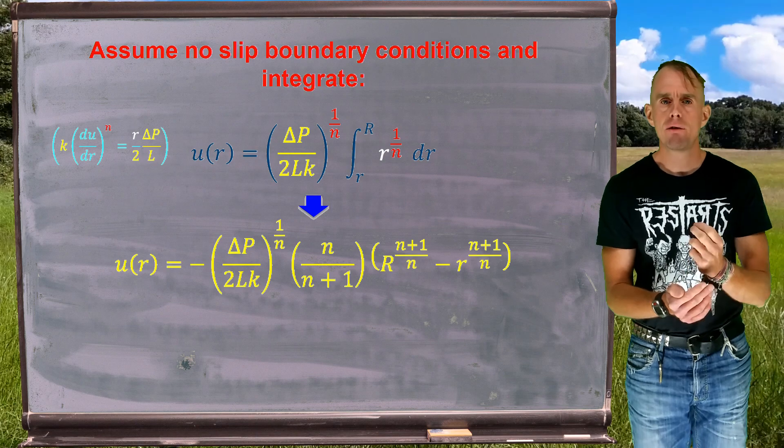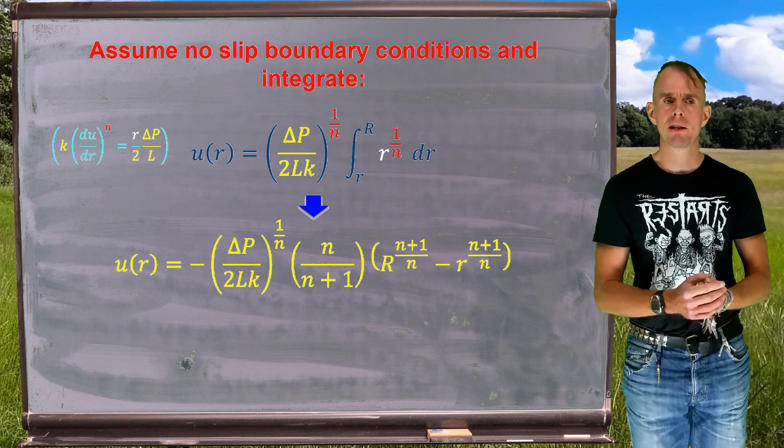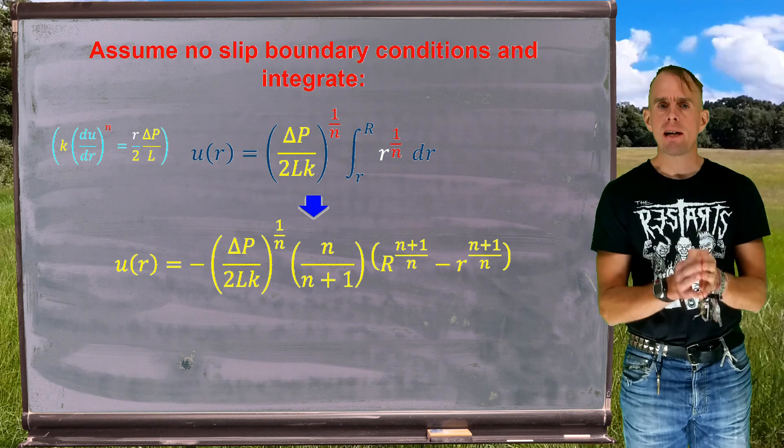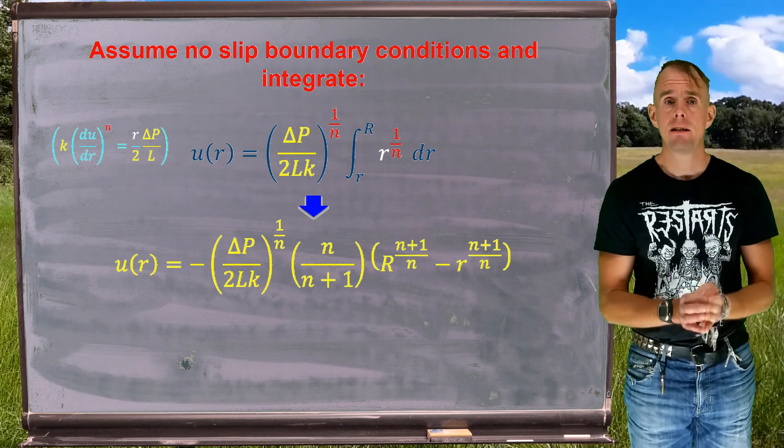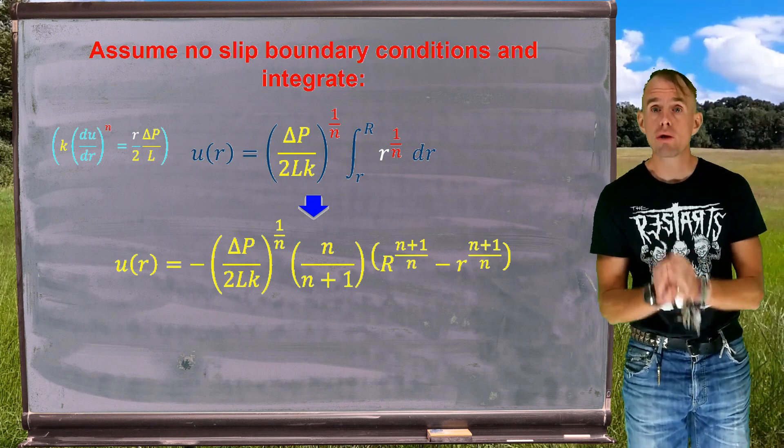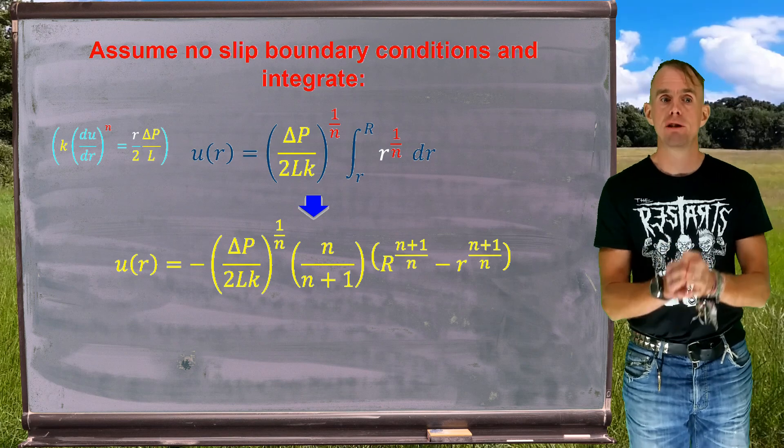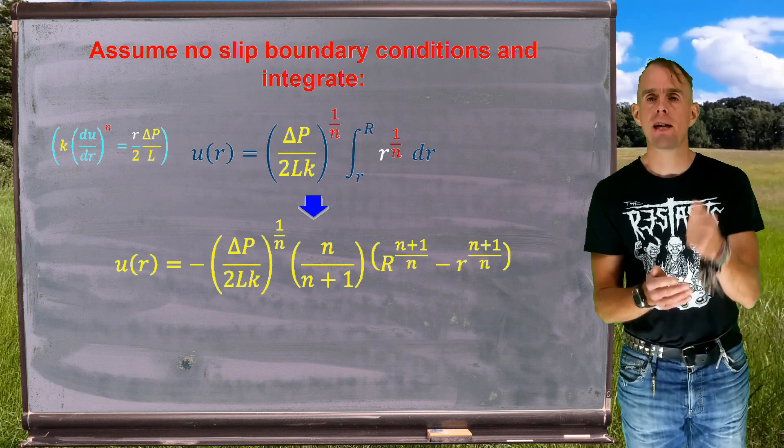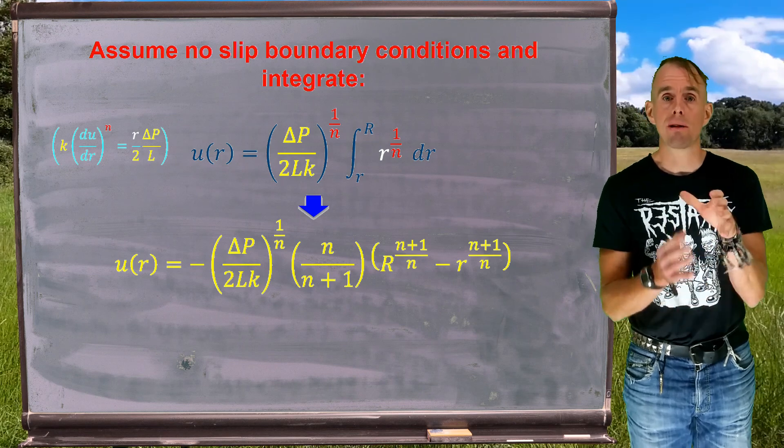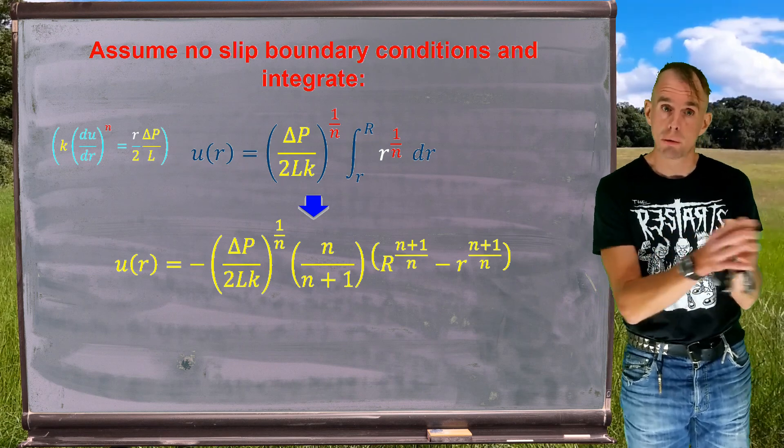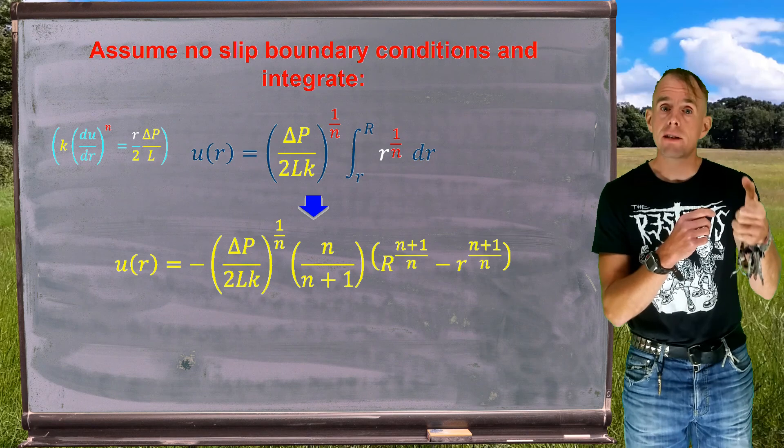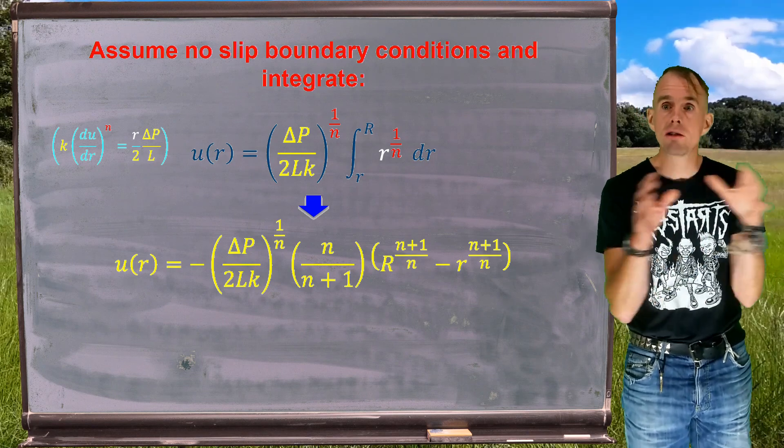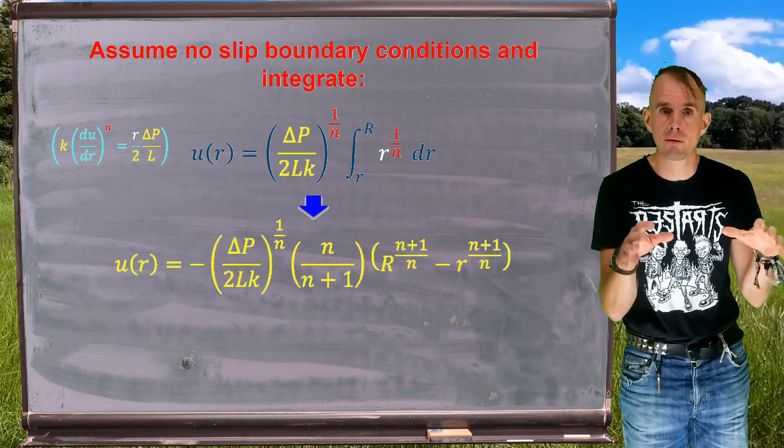Now, if you recall our discussion of our power law fluid, we can say that, look, if we set the power law index n equals to 1, we should get the relationship back from Newtonian fluid. If we think of k gamma dot to the n, if n equals 1, you have k gamma dot, which equals our stress tau, and if k equals mu, our Newtonian viscosity, we can see that that is the Newtonian constitutive law.